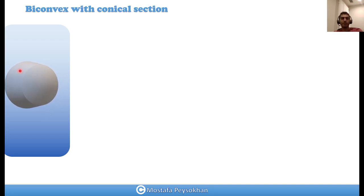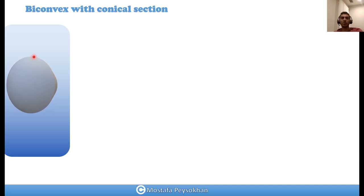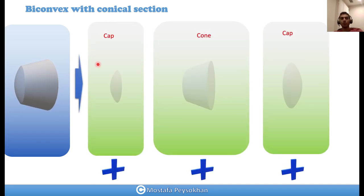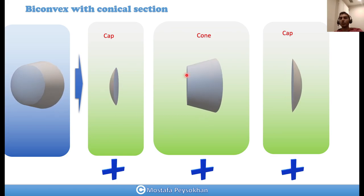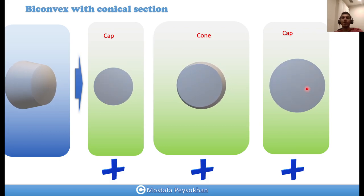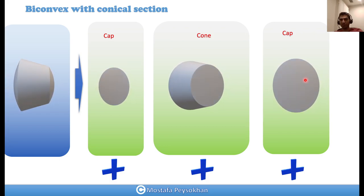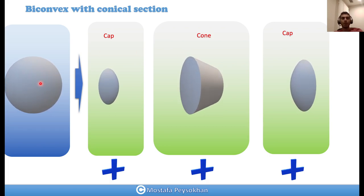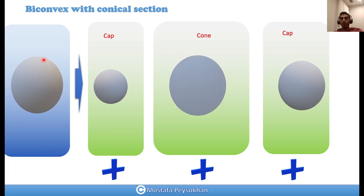For a biconvex lens with a conical section, we have two positive convex surfaces on two sides and a conical shape in the middle, meaning the diameter d1 at one end is different from the diameter d2 at the other. In this scenario, we have a cap, then a cone in the middle — we know how to calculate the weight of a cone — and another cap on the other side, and we add them all together.